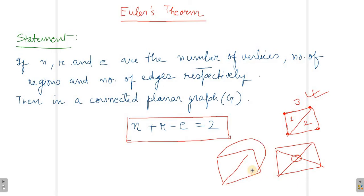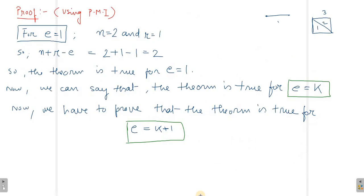So that is a planar graph. I hope you know that N plus R minus E equals to 2. This is the number of edges and this is a connected planar graph. So let's go ahead and prove this theorem.